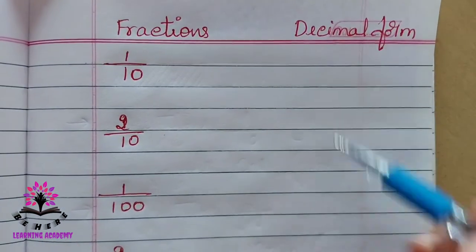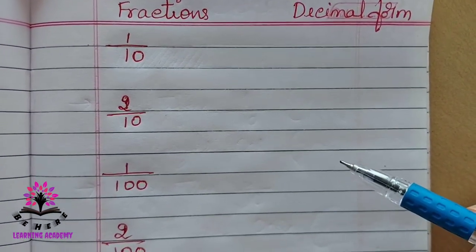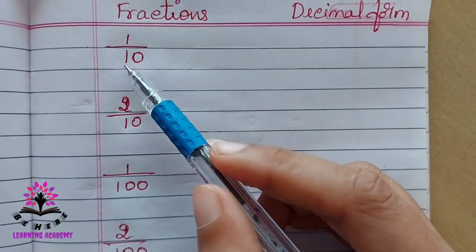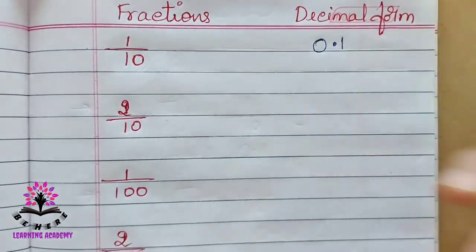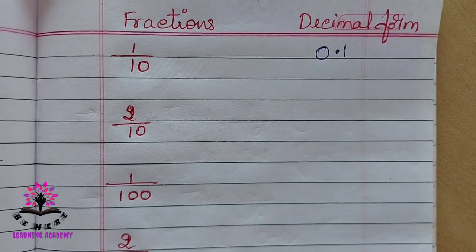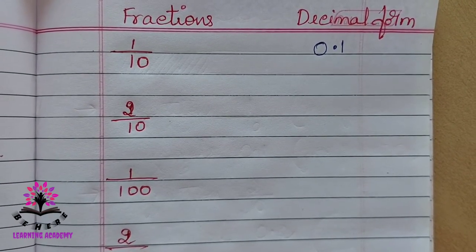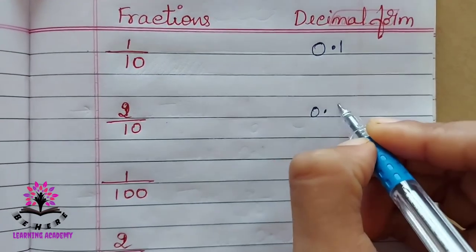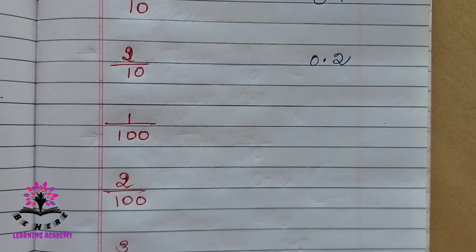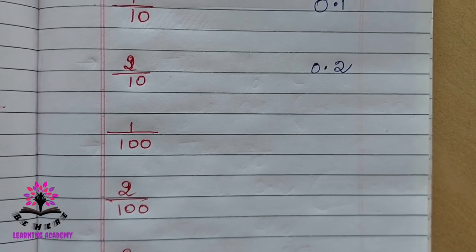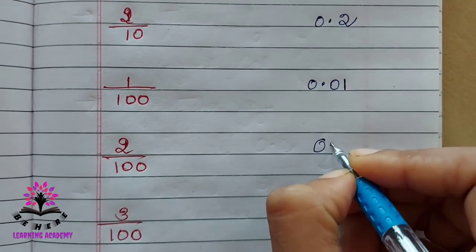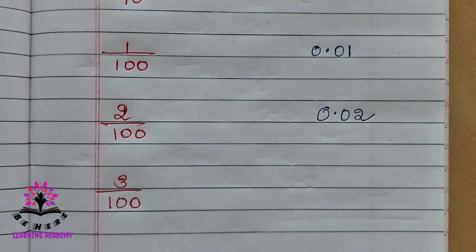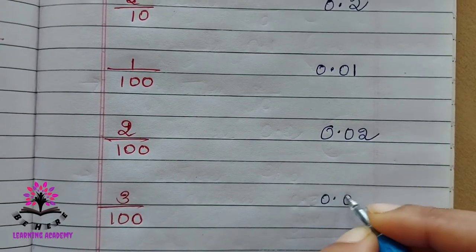Some fractions are given — you have to write their decimal form. 1/10: decimal form is 0.1. 2/10: decimal form is 0.2. 1/100: decimal form is 0.01. 2/100: decimal form is 0.02. 3/100: decimal form is 0.03.